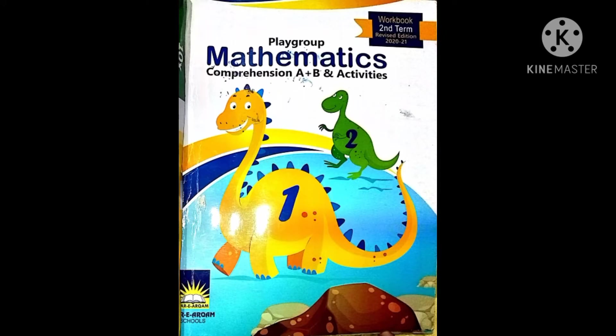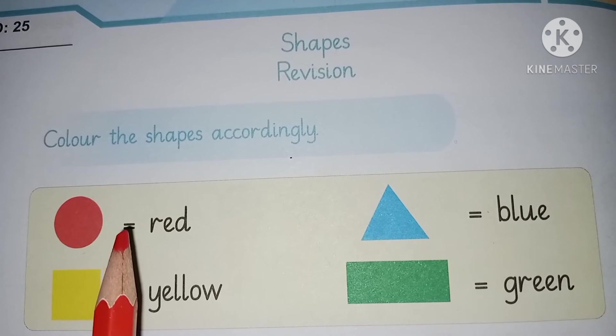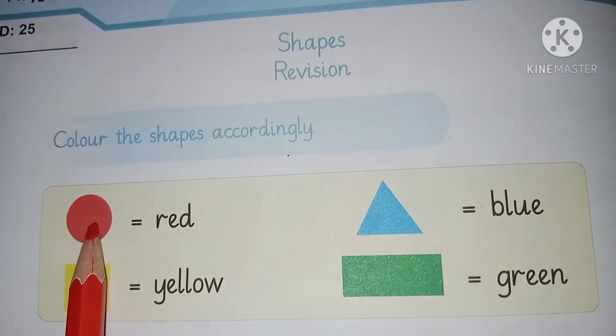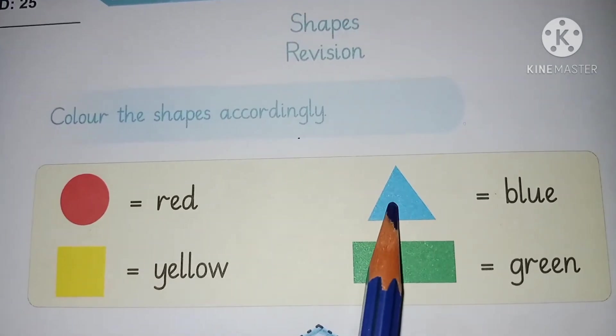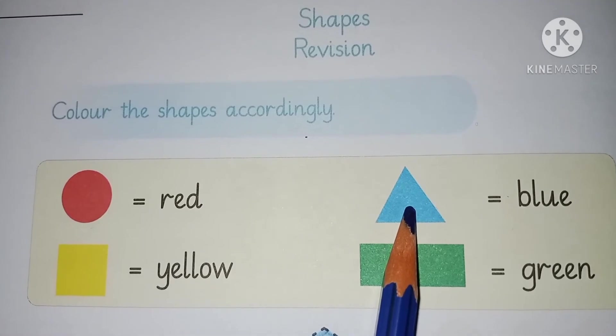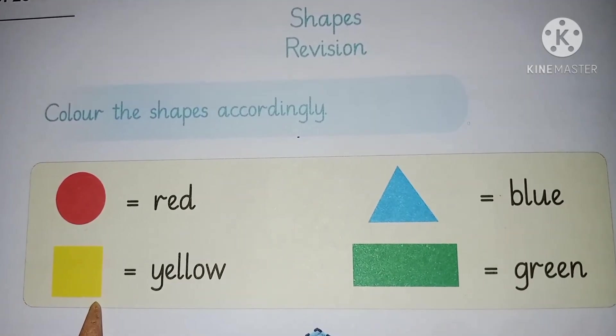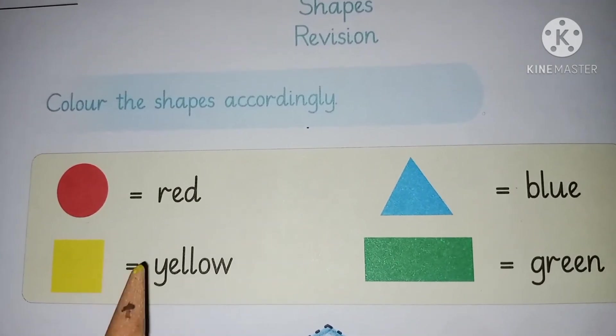My dear students, open the maths workbook page number 35. Students, color the shapes accordingly. Which shape is this? Circle. And circle color is red. Which shape is this? Triangle. And triangle color is blue. Which shape is this? It's square. And square color is yellow.